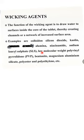Examples of wicking agents include silicon dioxide, kaolin, titanium dioxide, alumina, niacinamide, sodium lauryl sulfate, low molecular weight PVP, bentonite, magnesium aluminium silicate, polyester, polyethylene, etc. Depending upon the desired rate of entry of liquid into the system, selection of the right wicking agent is very important.